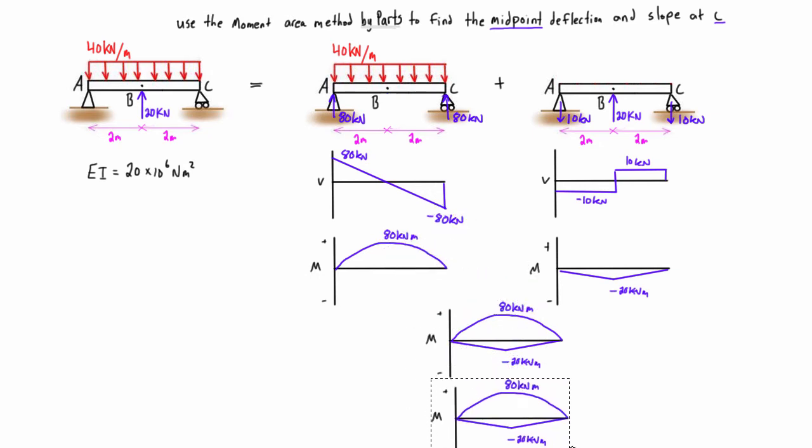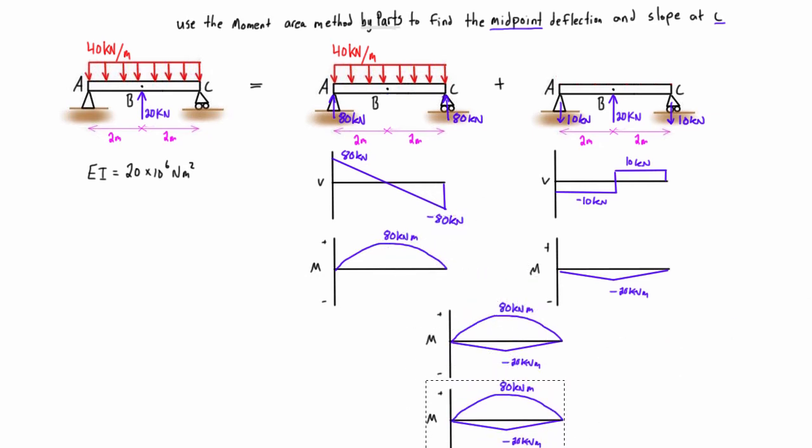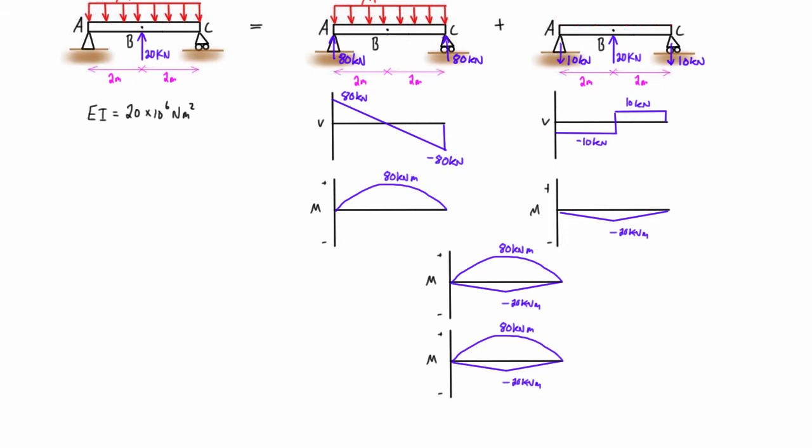All right, so now what we do is we want to draw the M over EI diagram, which is literally just a copy of the bending moment diagram. We're just going to come down here and we're going to divide every point on the graph by EI. So we write M over EI, and then 80 kilonewton meters divided by EI is 0.004 meters to the minus 1, and then minus 20 kilonewton meters divided by EI is negative 0.001 meters to the minus 1.